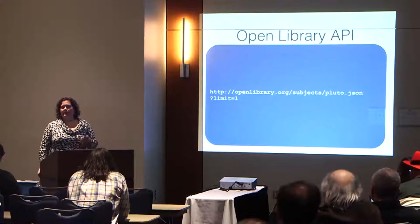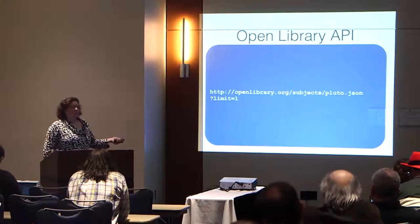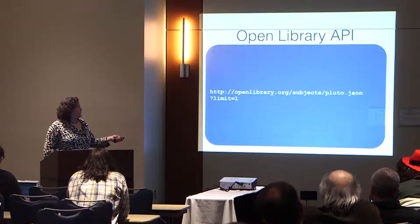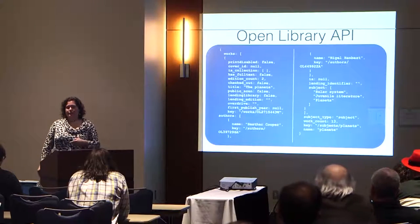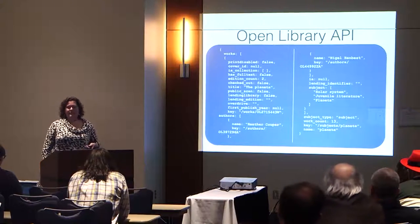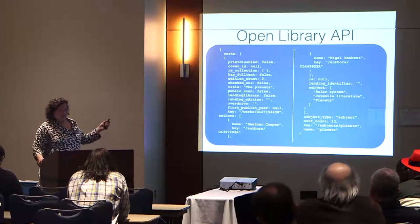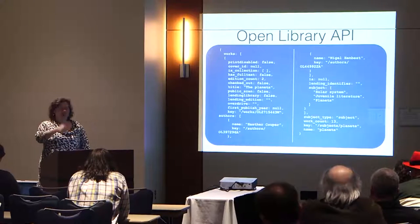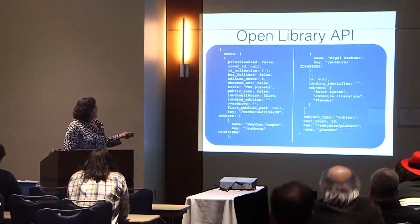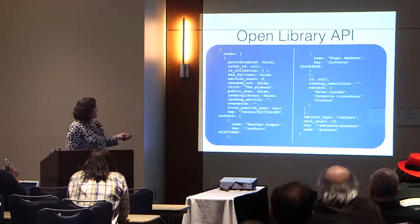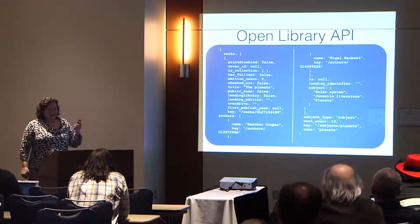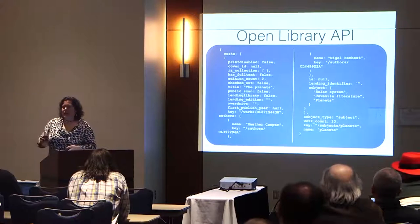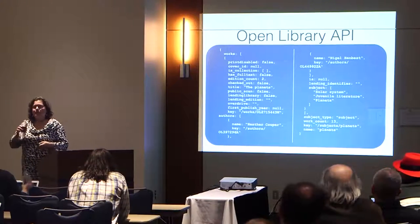Here's a really super quick example: I'm going to look for all the books in Open Library with a subject of Pluto, returned in JSON, limited to one result. Even then I had to truncate the information. The JSON returned is 'The Planets' by Heather Cooper and Nigel Henbest. You can see there's lots of information here. This is not a public scan, which means we can't lend it. This is a really robust, well-documented API used in a lot of places.